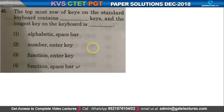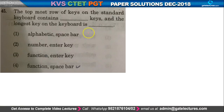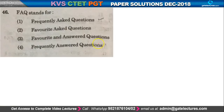Question number 45: the topmost row of keys on the standard keyboard contains all the function keys — F1, F2, F3, F4 and so on. The longest key of the keyboard is the spacebar. So option 4 is the right one. Question number 46: FAQ stands for — this is a very easy question — FAQ means Frequently Asked Questions.